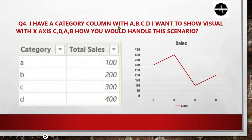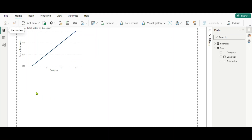Question number 4: I have a category column with A, B, C, D, and I want to show a visual with the x-axis ordered as C, D, A, B. How would you handle this scenario? Here you can see we have two columns — Category (A, B, C, D) and total sales for each category. If we plot this in a line chart, it will show the series as A, B, C, D. But the interviewer wants it shown as C, D, A, B. We can create a measure based on conditions to achieve this.